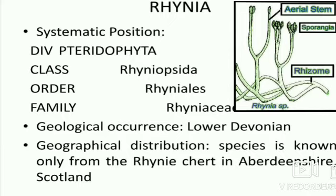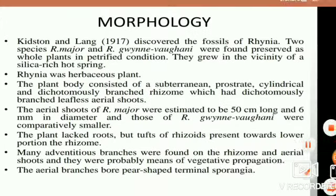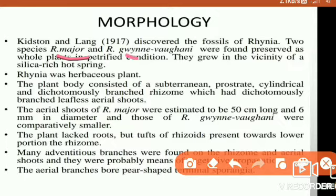Two scientists discovered it — Kidston and Lang. You can see the structure in detail: the aerial stem which is in contact with air, and the structure has cone-like sporangia, and below you can see the rhizome. Kidston and Lang discovered it as a fossil plant. There are two major species: Rhynia major and Rhynia gwynne-vaughanii. These species were found preserved as a whole plant in petrified condition.